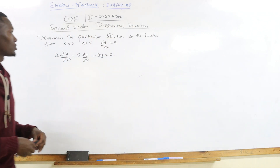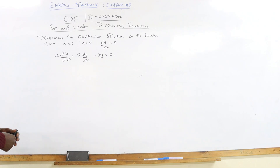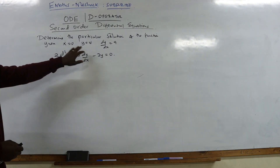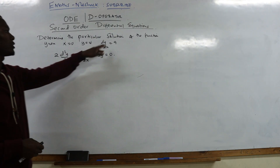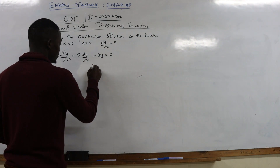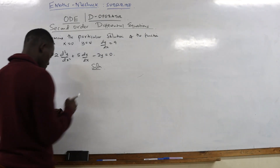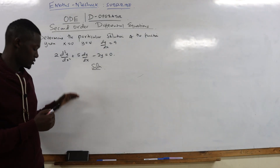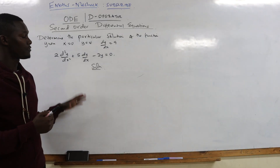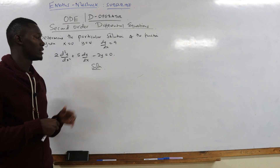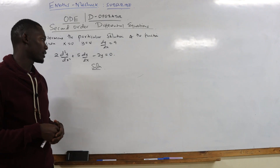Let's jump into our question directly. Determine the particular solution of the function given the equation, with the conditions that when x equals 0, y equals 4, and the first derivative gives you 9. We'll be figuring out differences when it comes to finding the roots as we solve.